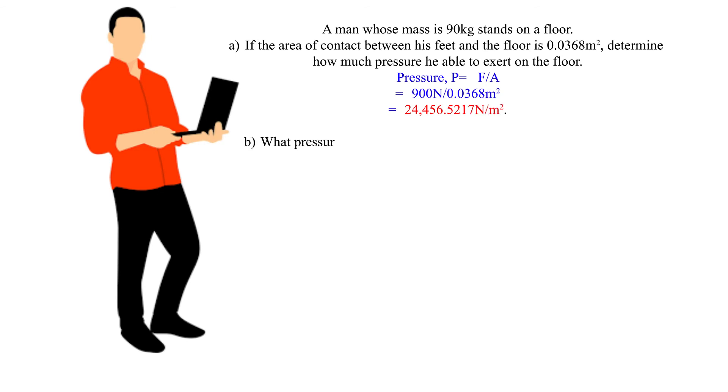Part B: What pressure will he exert on the floor if now he stands on one foot? Pressure, P = 900 newtons ÷ (0.0368 ÷ 2) = 48,913.0435 newtons per meter square.